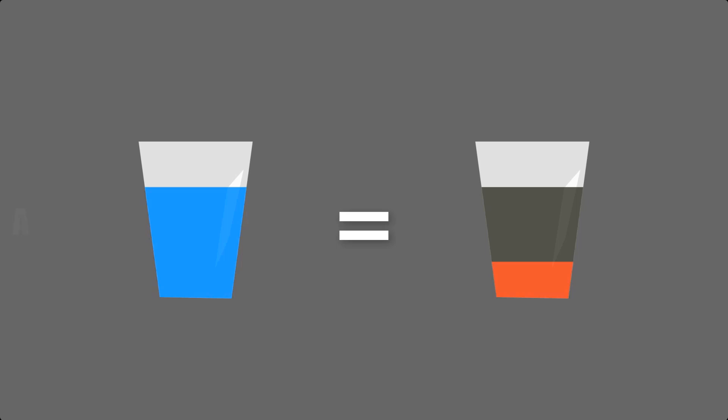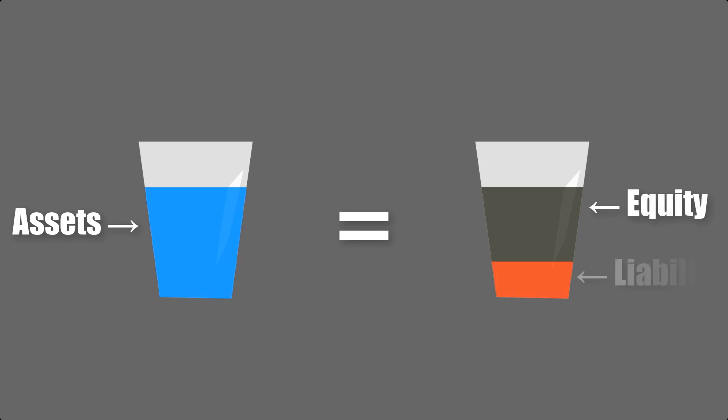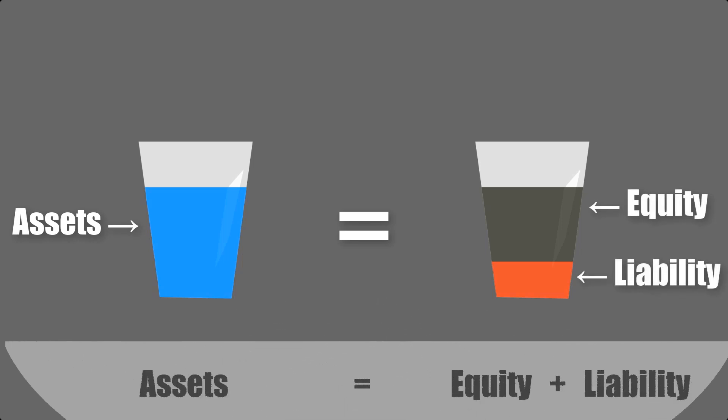Let us now call the blue liquid as assets, the black as equity, and the red as liability. In this case, assets should always be equal to equity plus liability. And this is the core and most important concept in accounting — the two levels must always be equal.